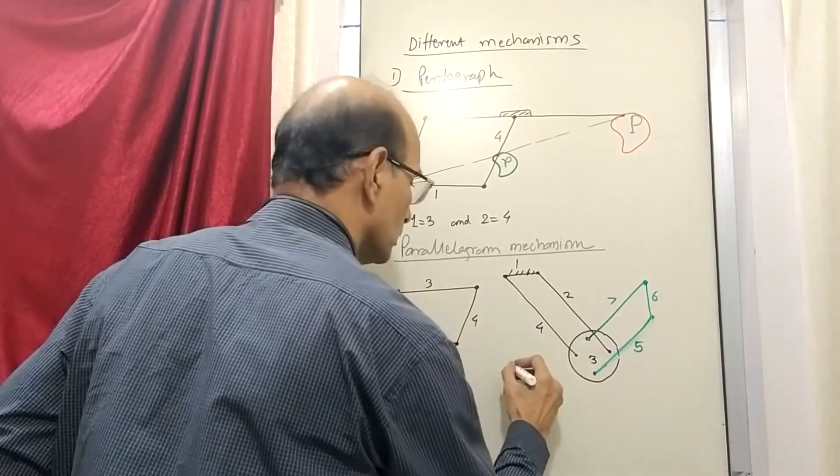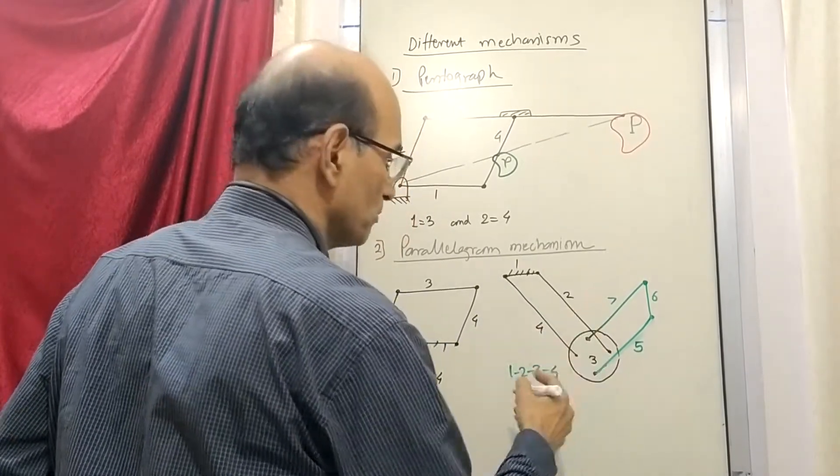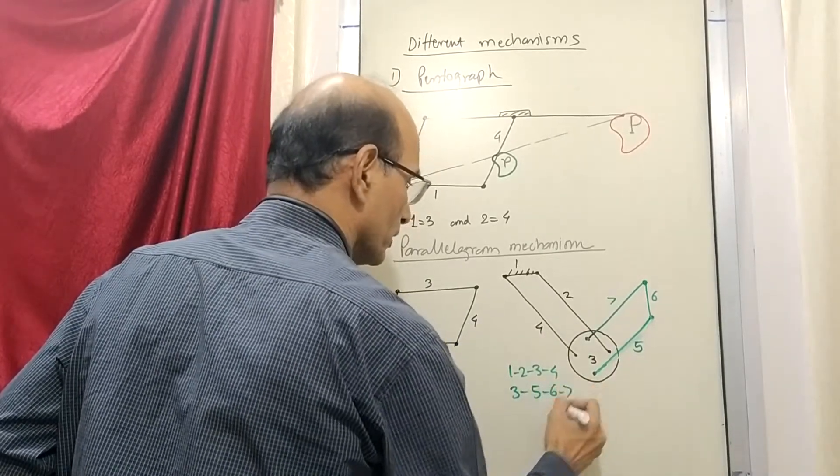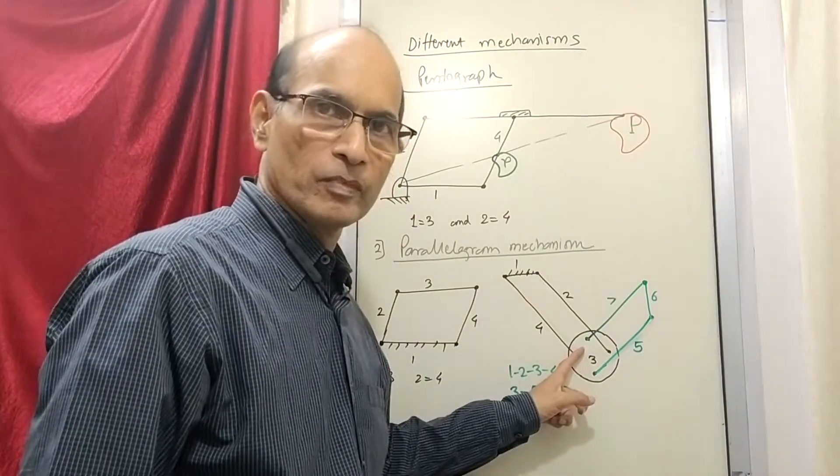So one two three and four. This is one mechanism. And three five six seven. This is another four bar mechanism fitted on the first mechanism. So three is common.